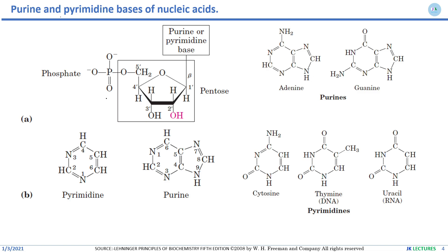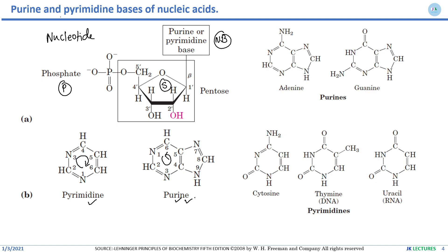A DNA molecule is composed of nucleotides. A nucleotide is composed of three things: a sugar, a phosphate, and a nitrogenous base. The nitrogenous base in DNA can be a purine or a pyrimidine. There is a clockwise numbering of atoms in heterocyclic rings for pyrimidines and anti-clockwise numbering for purines.